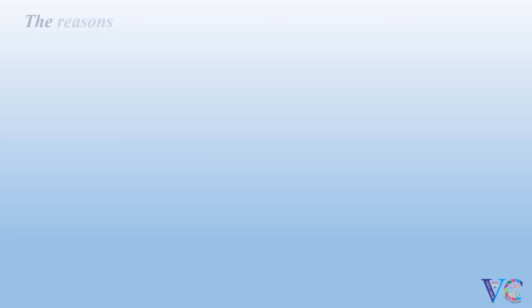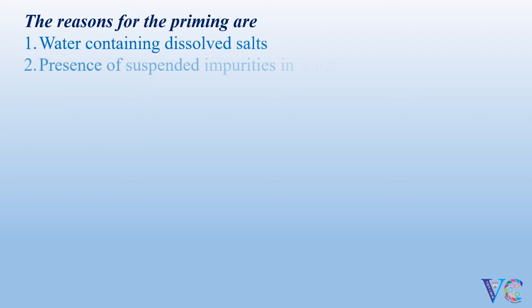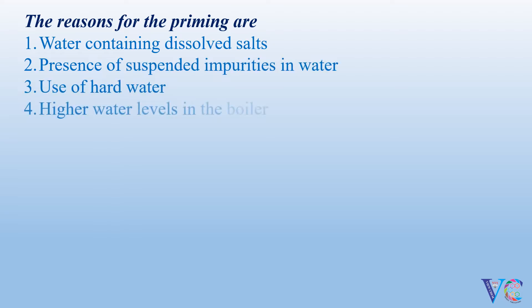The reasons for priming are water containing dissolved salts, presence of suspended impurities in water, use of hard water, higher water levels in the boiler, sudden rise in temperature, repeated temperature fluctuations.